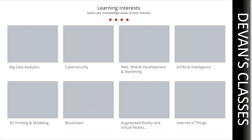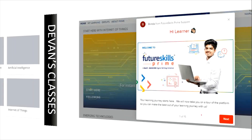Your interests can include big data analytics, cyber security, web and mobile development, marketing, artificial intelligence, 3D printing and modeling, blockchain, augmented reality, internet of things, and many others. Select any three interests depending on your criteria and what kind of certification you want to pursue.